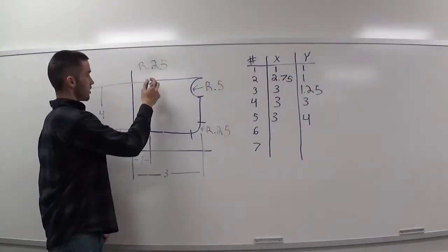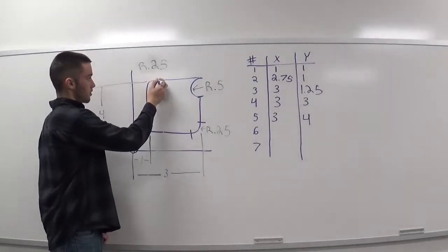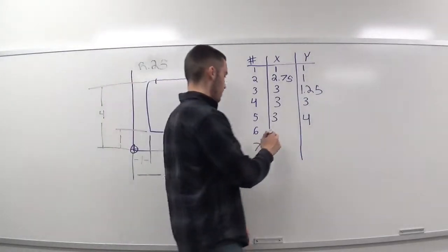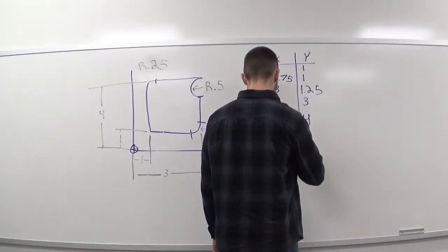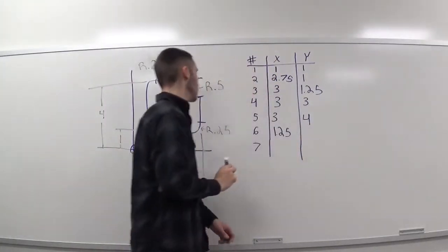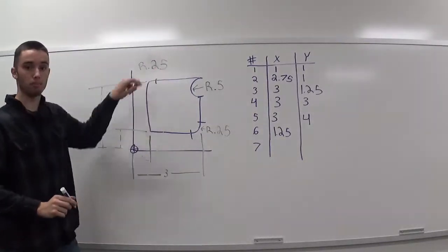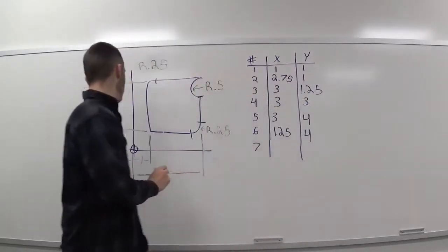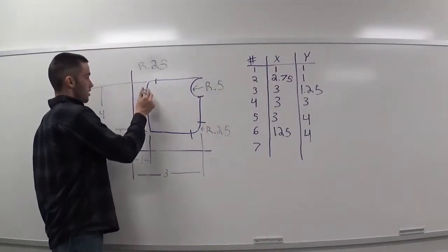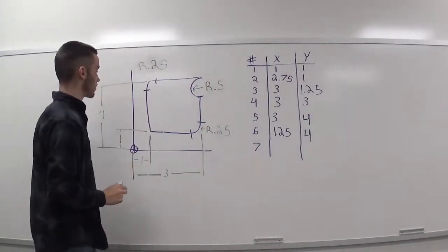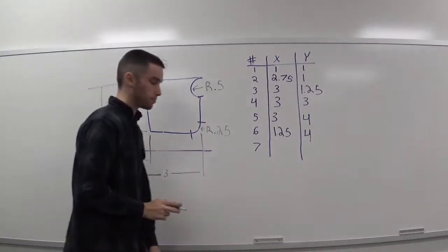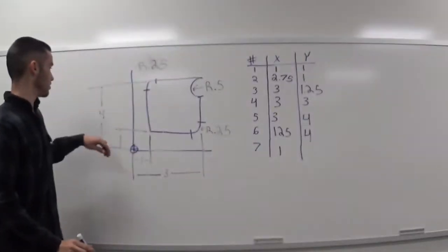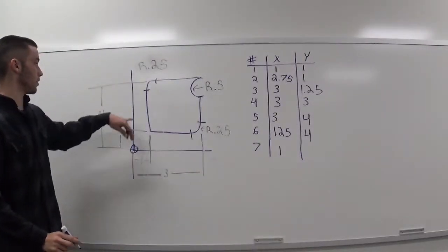The next point is the start of this radius, right over here. So, we need the start point, which would be 1.25 for the x. And our y is still up here at the top. So, four. And then, our last point is the end point of this radius. Put our x at one. And our y value at 3.75.